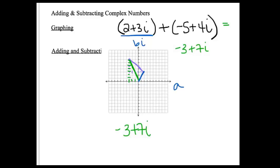How could I figure that out algebraically? Your instinct should tell you that you should add the real parts and then add the imaginary parts. And there we go, we get negative 3 plus 7i.